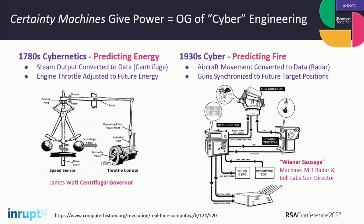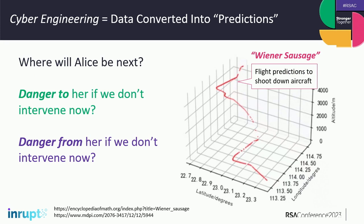In the 1930s, cyber moved to predicting fire — if you could figure out where something was going to be in the future you could fire something at it and hit it. They were trying to do it with machines in order to predict path in a 3D box. This is called the Wiener sausage — the guy's name was Wiener and the sausage was the trail you'd build within the 3D model. The fundamental questions are: do we need to stop the thing inside the Wiener sausage to help it, or stop it before it does harm — like a bomber about to hit San Francisco, or a Tesla about to kill everybody?